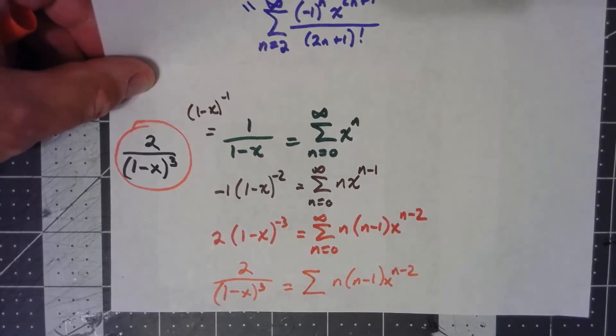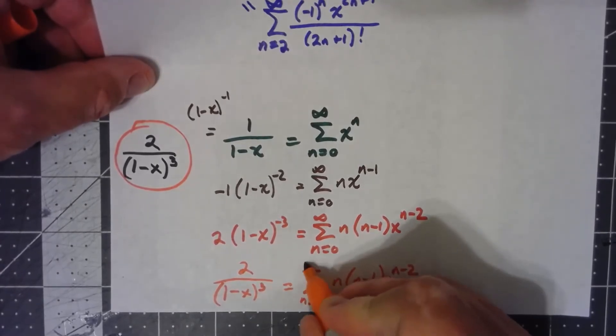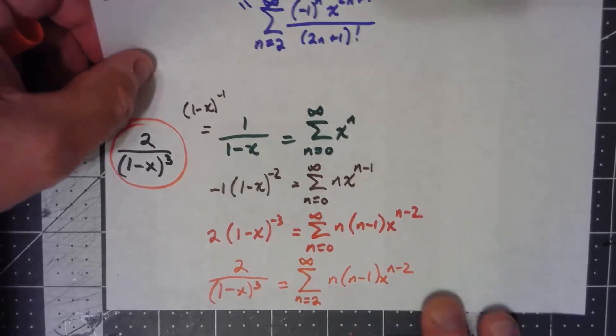No real sense in having that in there. And similarly, when n equals 1, I get 0. So, I can say this thing starts from n equals 2 to infinity, and it's the same thing. And that's a really common trick to do.